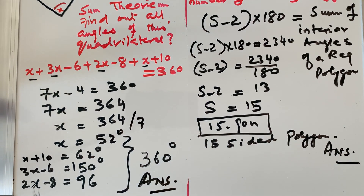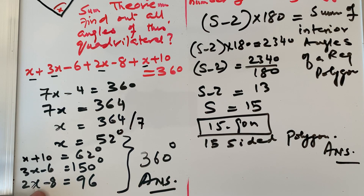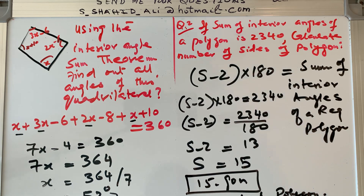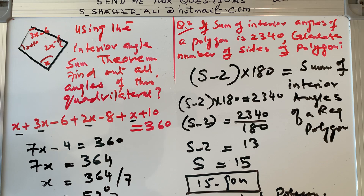The sum of all interior angles of any quadrilateral is 360 degrees. We found x and then calculated all the relevant angles: 52, 62, 150, and 96 degrees, which sum to 360 — matching the theorem. Thank you for watching. If you like the video, please subscribe to my channel and send your questions to my email at s_shaheed_ali@hotmail.com.